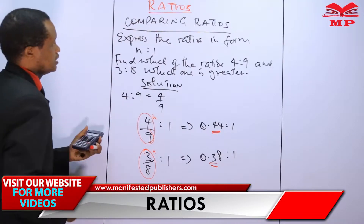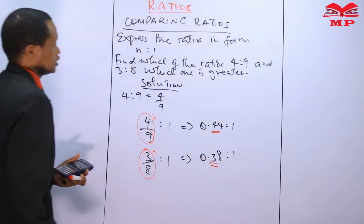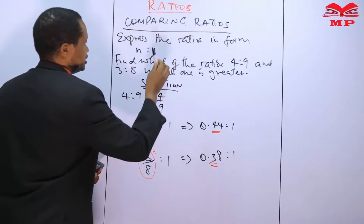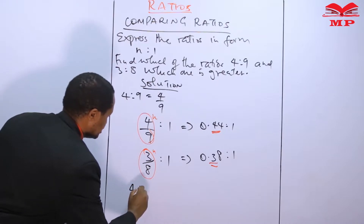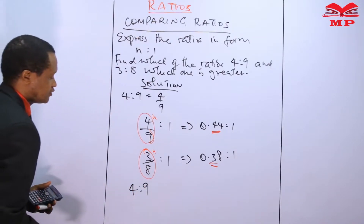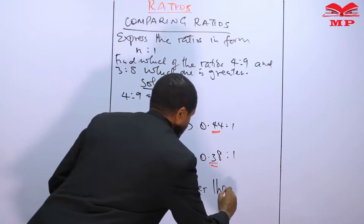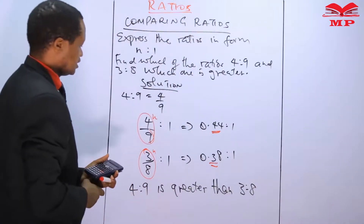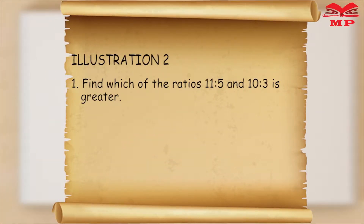There are only two stages: first express the ratios in that form, then compare the two. The answer is that the ratio four to nine is greater than three to eight.